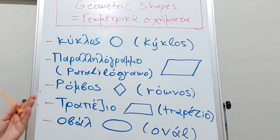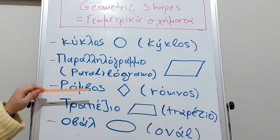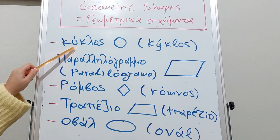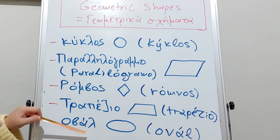Κύκλος, παραλληλόγραμμο, ρόμβος, τραπέζιο, οβάλ. And one last time: κύκλος, παραλληλόγραμμο, ρόμβος, τραπέζιο, οβάλ. Also, you can watch my lips: κύκλος.